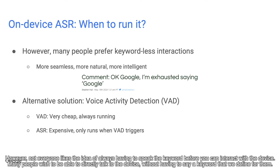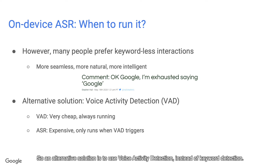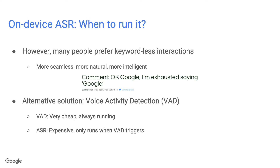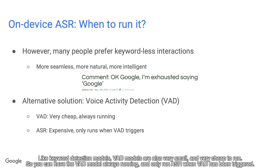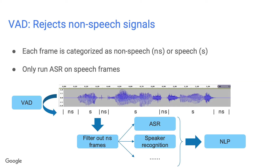However, not everyone likes the idea of always having to speak a keyword before interacting with the device. Many people wish to talk to the device directly without saying a predefined keyword. So an alternative solution is to use voice activity detection instead of keyword detection. Like keyword detection models, VAD models are also very small and cheap to run, so you can have the VAD model always running and only use ASR when VAD has been triggered.